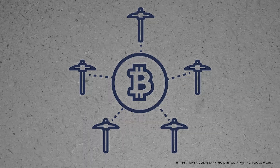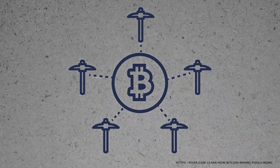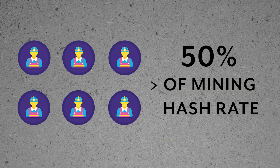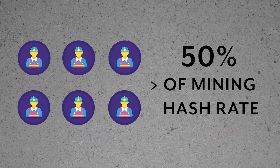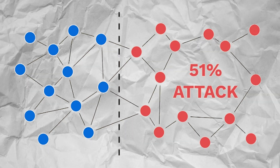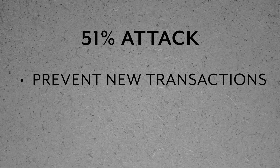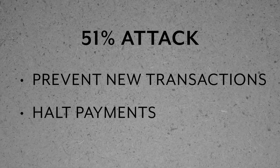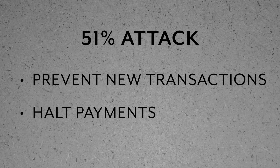Third is something called the 51% attack. Miners are incentivized to work together to produce the next block, and these collaborations between miners are called mining pools. However, if a group of miners controls more than 50% of the network's mining hash rate, owning 51% of the nodes gives the controlling parties the power to alter the network. The attackers are then able to prevent new transactions from gaining confirmations, allowing them to halt payments between some or all users.